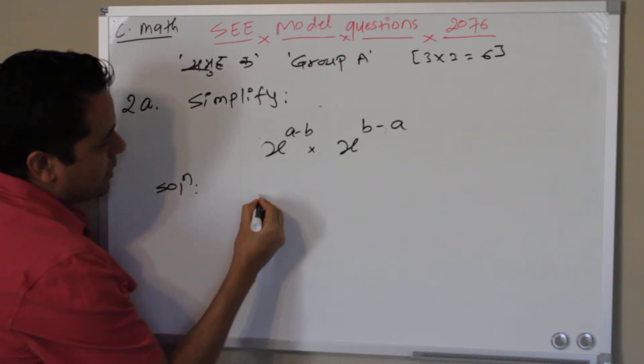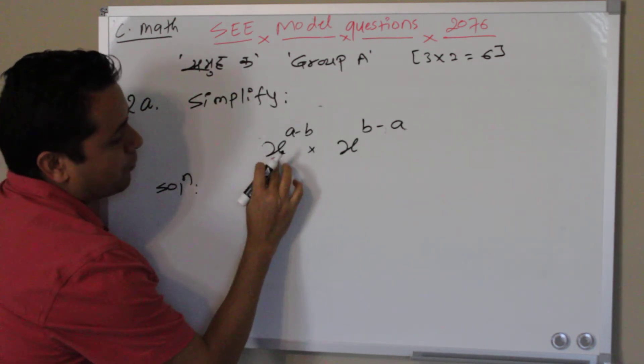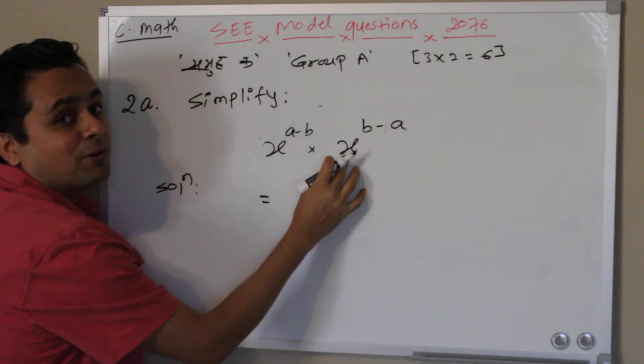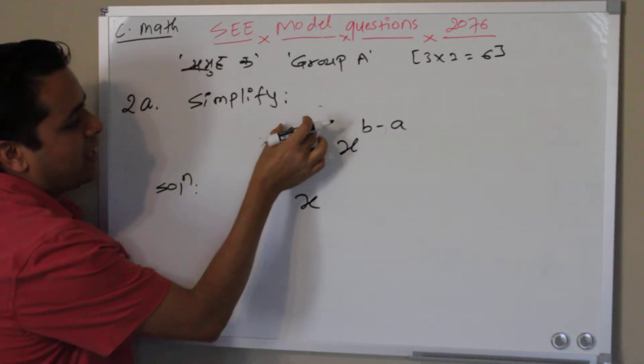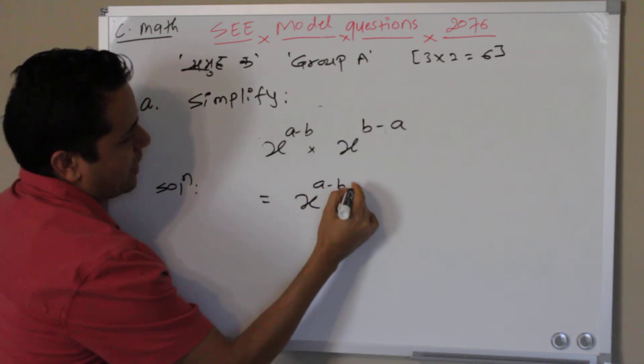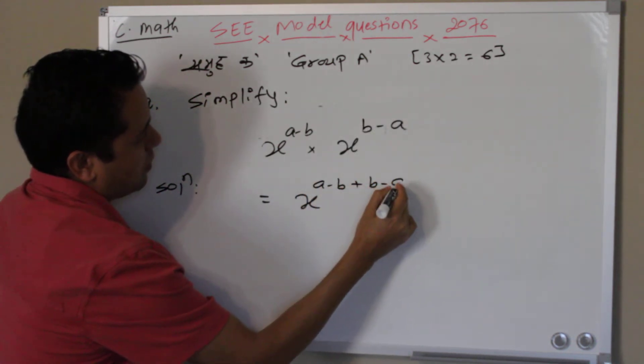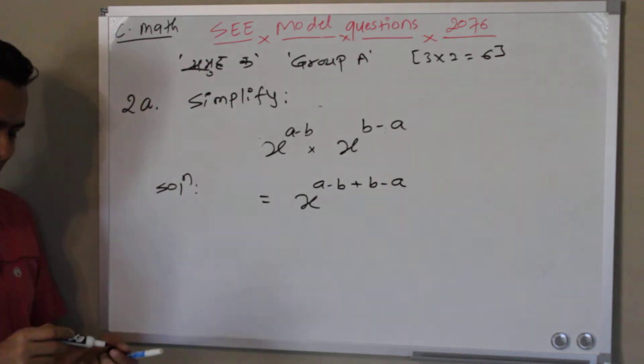So what is the solution? From these two bases, I have to write down only one base and add the power. So I need to add the power. That's all.